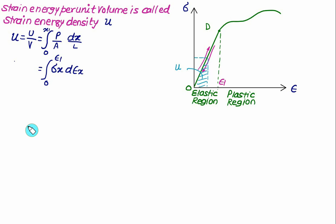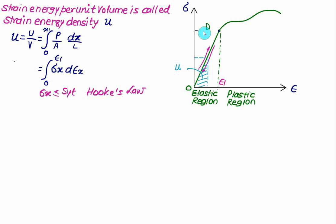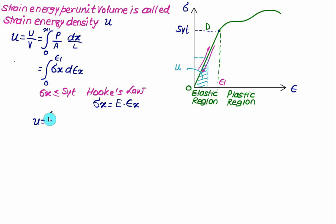The strain energy per unit volume — strain energy density — is given as the integral from 0 to ε₁ of σₓ dεₓ. If σₓ is within the elastic limit, meaning σₓ ≤ Syt (yield strength), we can apply Hooke's law. According to Hooke's law, σₓ = E·εₓ, so we replace σₓ with E·εₓ and the strain energy density becomes the integral from 0 to ε₁ of E·εₓ dεₓ.